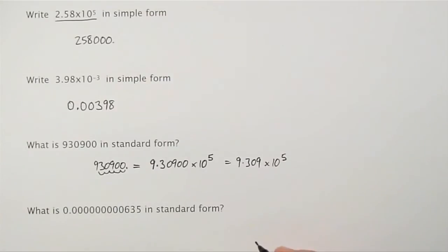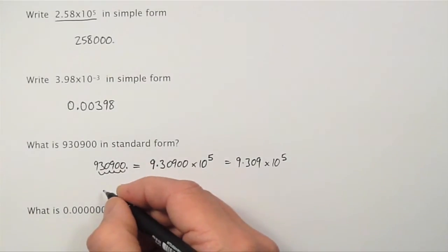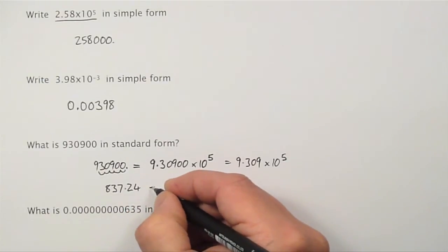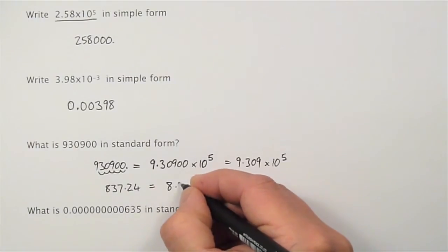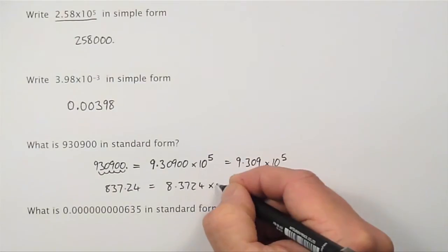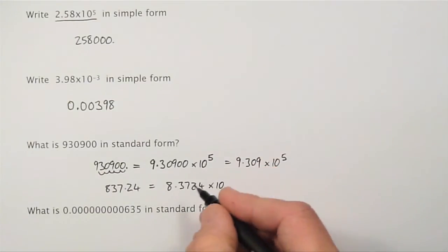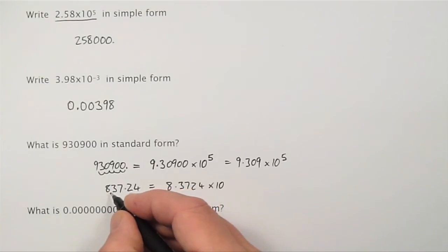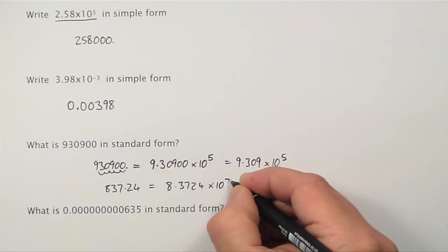Now, let's try this with another number. If I was to write down 837.24 in standard form, it's going to be 8.3724 times 10 to the power... Now, I've moved the decimal point 1, 2 places, so the power is 2.